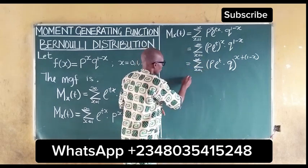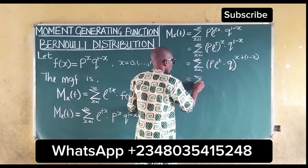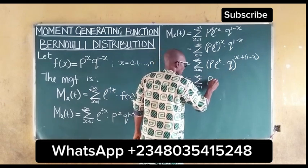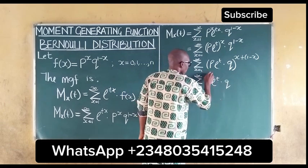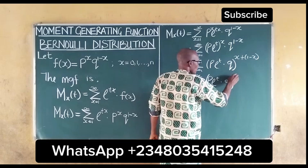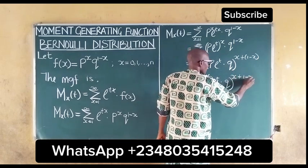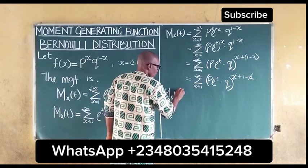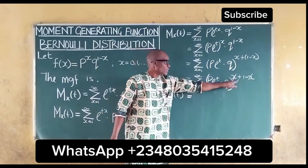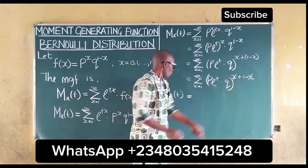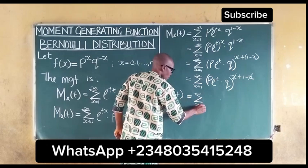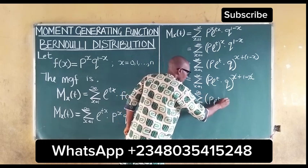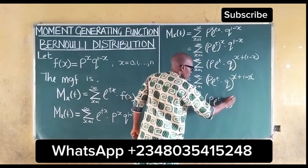Our moment generating function becomes the summation from x equal to 1 to infinity of pe^t multiplied by q, raised to the power of 1, since x plus (1 minus x) equals 1 and those terms cancel.